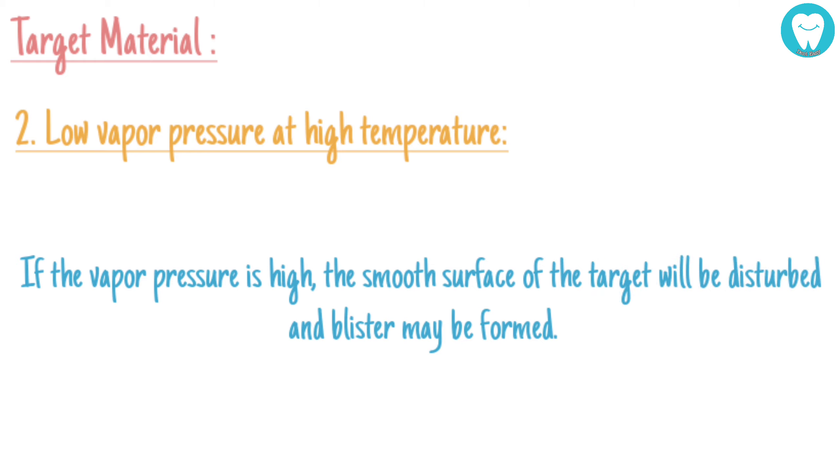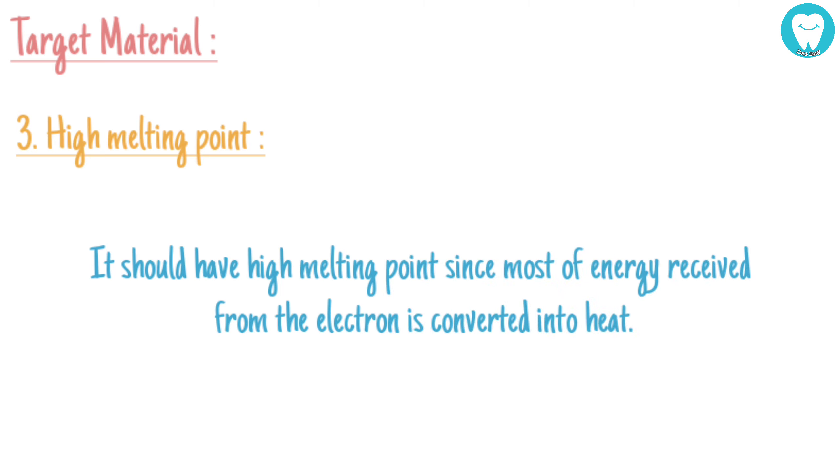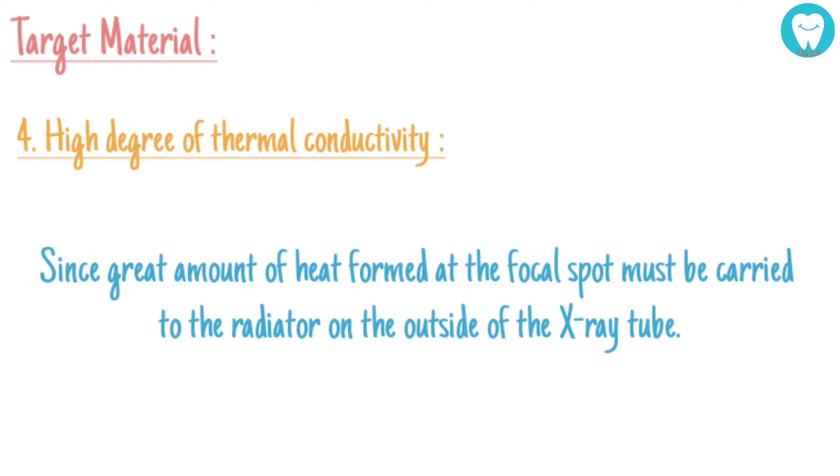Third, high melting point. It should have a high melting point since most of the energy received from the electrons is converted into heat. High degree of thermal conductivity. Since great amounts of heat formed at the focal spot must be carried to the radiator on the outside of the X-ray tube.